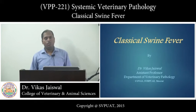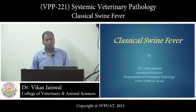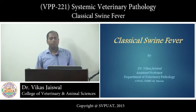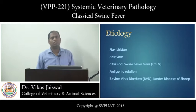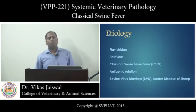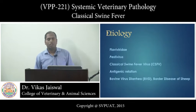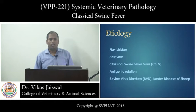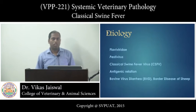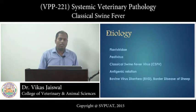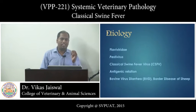It also occurs in acute, sub-acute, chronic, and inapparent forms. Coming to etiology, the virus belongs to family Flaviviridae and the genus Pestivirus. This genus comprises, apart from classical swine fever, bovine viral diarrhea and border disease of sheep. All three are interrelated because they are antigenically related.